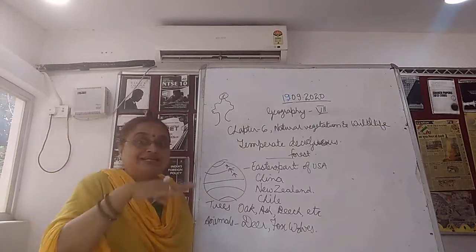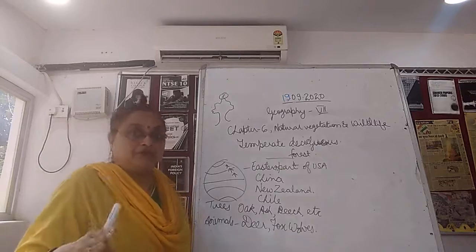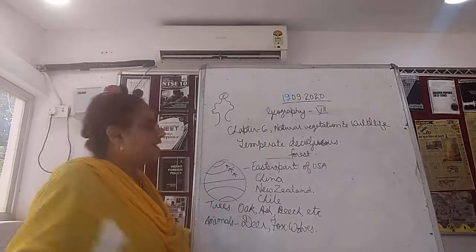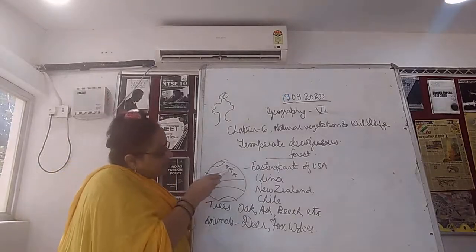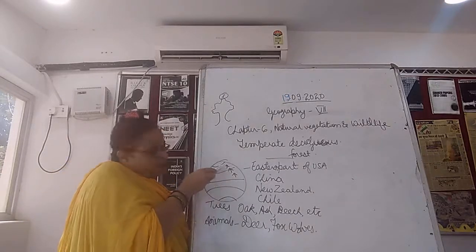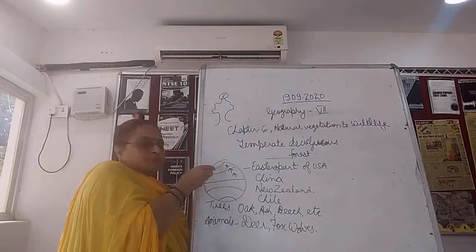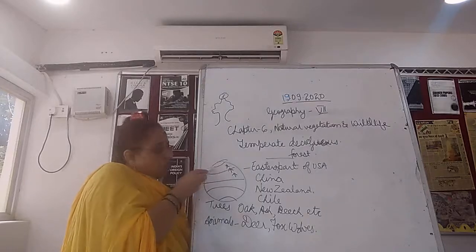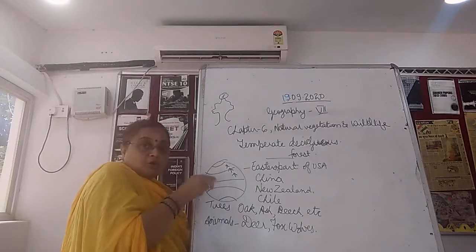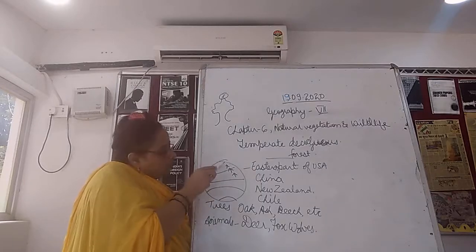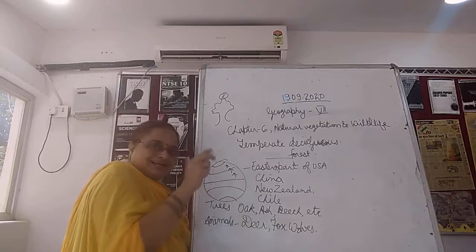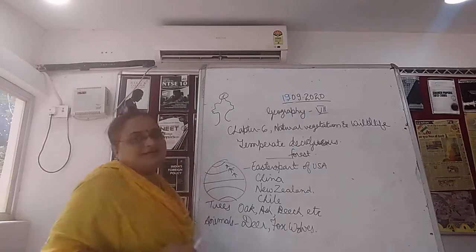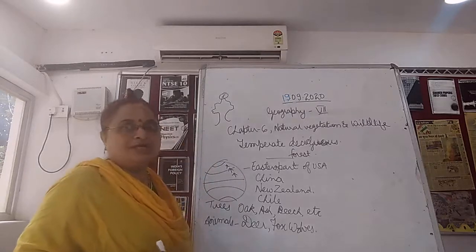So we don't have a temperate type of climate. Temperate climates are found when you go above the Tropic towards the pole. Between the pole and the tropic is the temperate region.